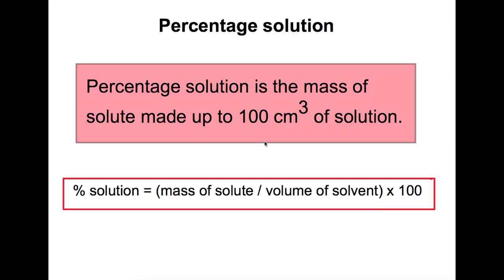Let's start by looking at percentage solution. The definition of percentage solution is the mass of solute required to make up 100 centimeters cubed of a solution. The equation you can use is: percentage solution equals the mass of the solute divided by the volume of solvent used, times by 100.